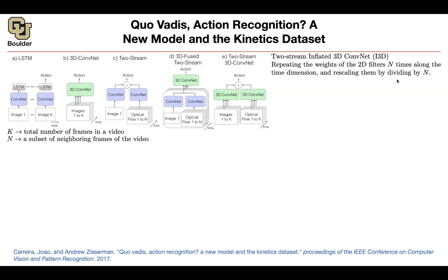You start with a convolutional neural network perhaps trained on ImageNet — these give you your 2D filters. Now you need to inflate it to three dimensions. You just copy it and then divide each weight by N, giving you your 3D filters.